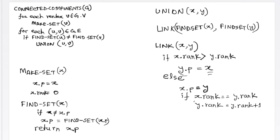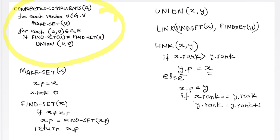Let us go over a detailed example today. In the example we will discuss there will be two path compressions. We will trace our component finding function to make sure that the overall concept of discovering components becomes clear. This algorithm here is the algorithm to find connected components given a graph.